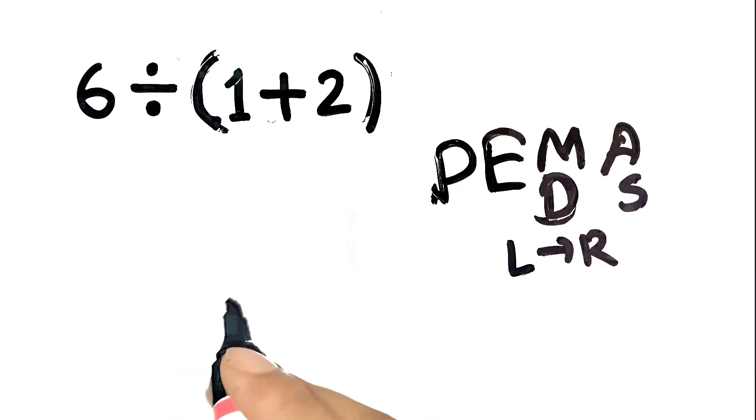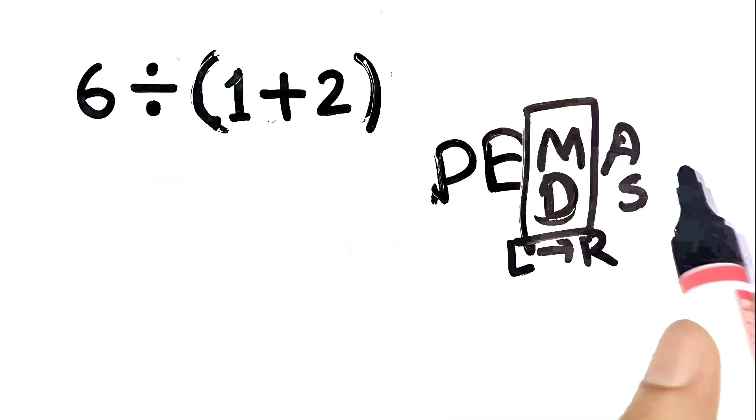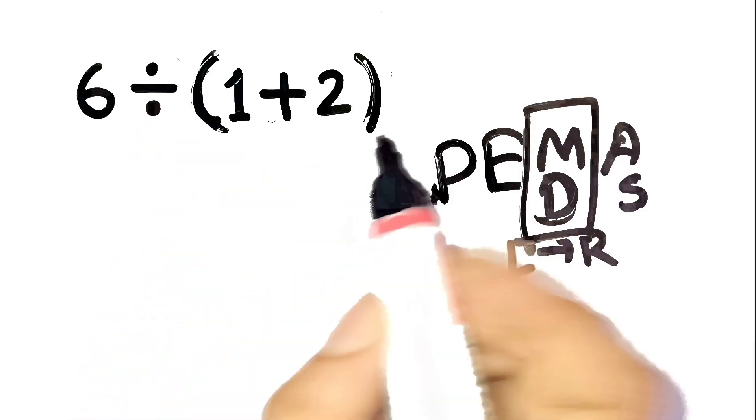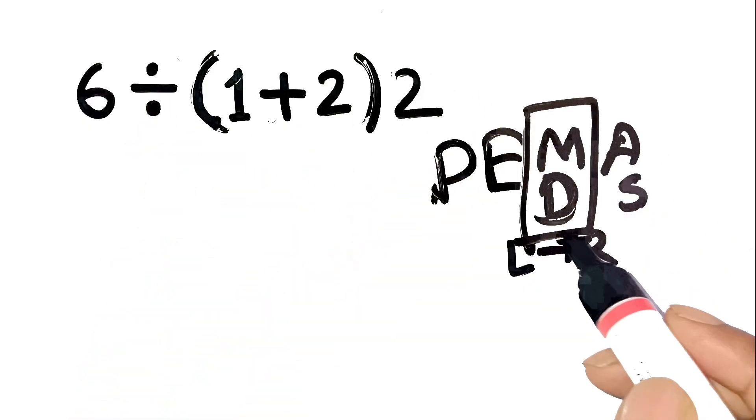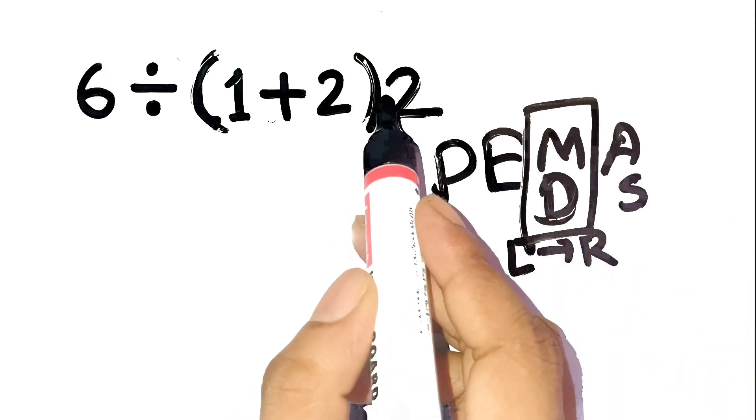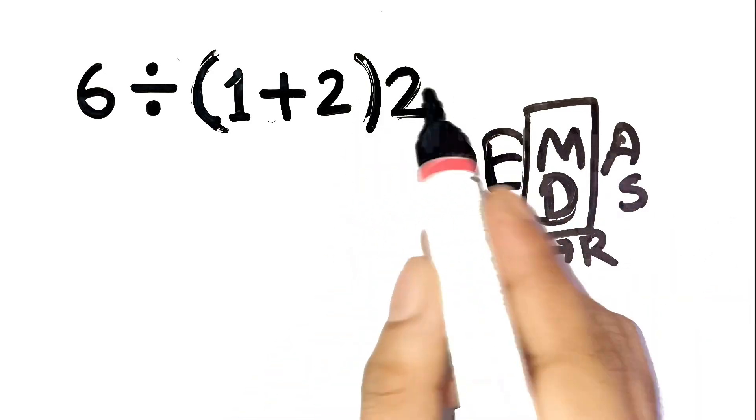Important point. Multiplication and division are on the same level. So when they appear together, we just work left to right. We don't automatically multiply everything inside the parentheses first with what comes after.